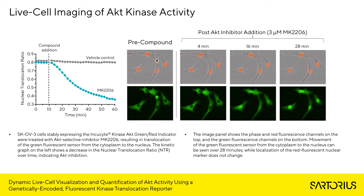First, we'll look at live cell imaging of AKT kinase activity. In this example, SCOV3 cells stably expressing the Incusite Kinase AKT green-red indicator were treated with AKT selective inhibitor MK2206. This results in the translocation of the green fluorescent sensor from the cytoplasm to the nucleus. In the pre-compound condition, the signal is located primarily in the cytoplasm and not in the nucleus. After addition of MK2206, we can see how that signal moves from the cytoplasm into the nucleus, and at the 28-minute time point, the signal is primarily in the nucleus.